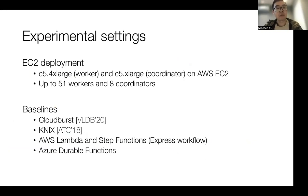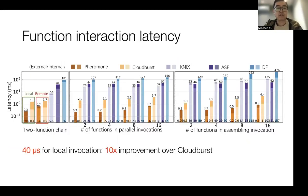We evaluated Pheromony on an EC2 cluster and include four serverless platforms as baselines. The first is Cloudburst, a lightweight, high-performance serverless platform — Pheromony is actually built atop Cloudburst. The other three baselines are Knative, Lambda with Step Functions, and OpenWhisk. We first show a microbenchmark that compares the invocation latency of all serverless platforms across three common interaction patterns: function chain, parallel invocations, and aggregation invocation.